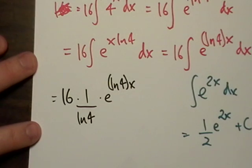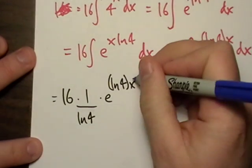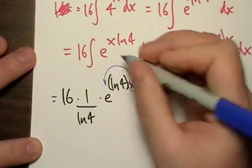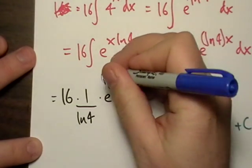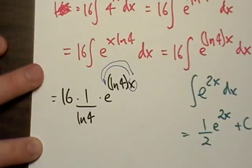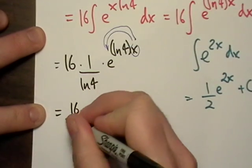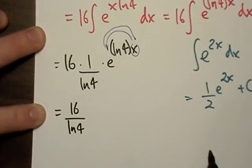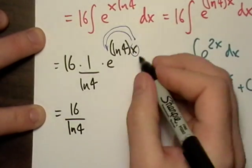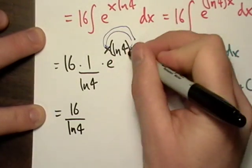Same deal. We're just going to move this back. And then we're actually going to shoot it back up on top of the four. So what we'll do is we'll have 16 over natural log of 4, and then I'll put the x back in front of here.